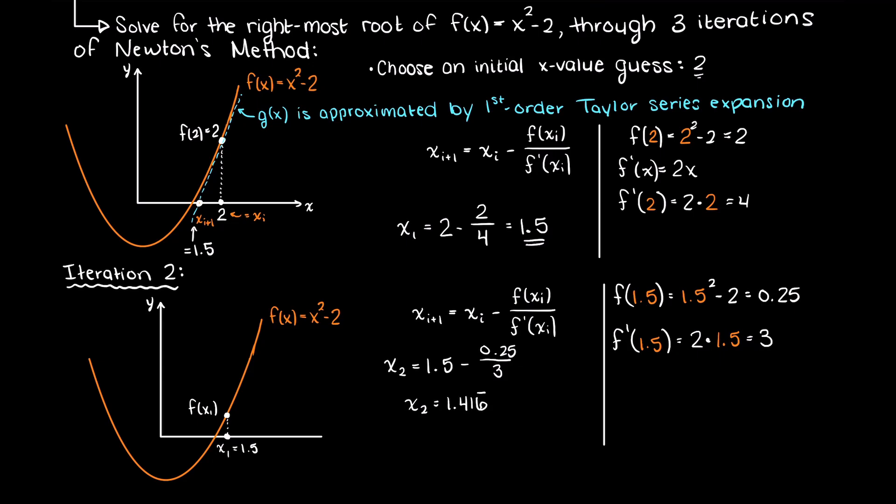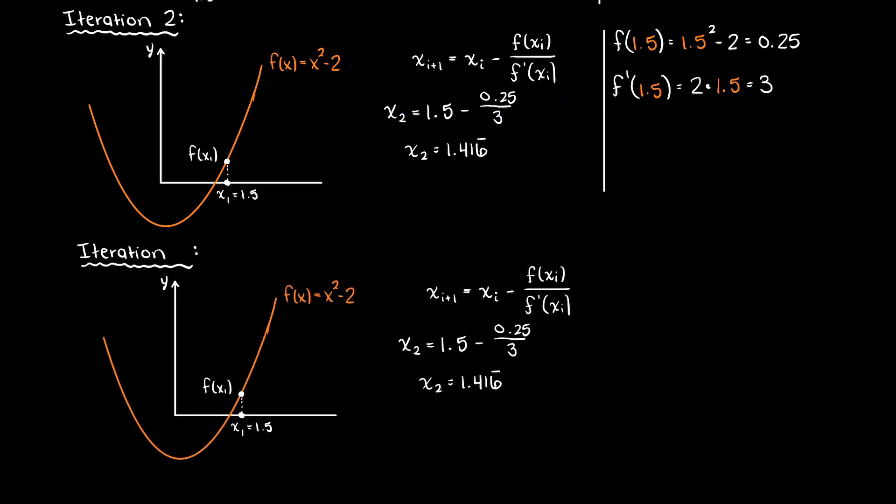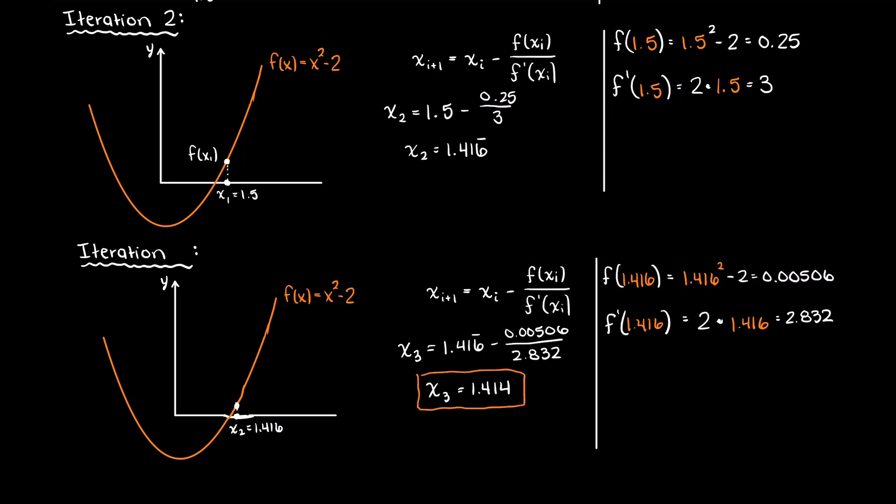Lastly, we just need to complete one more iteration of Newton's method, using our third x value which is 1.416. Let's just evaluate our function and the derivative at 1.416. This gives us 1.414, which is really close to the real root of this function.